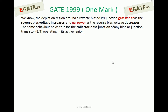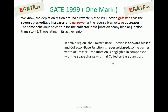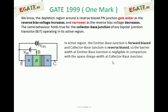Considering the BJT whenever it is acting in the active region, the same behavior holds true for the collector base junction. Under the active region, the collector base junction is reverse biased and the emitter base junction is forward biased with external voltage VBE. This is the NPN transistor diagram — emitter base junction is forward biased with VBE and collector base junction is reverse biased with external voltage VCE1.